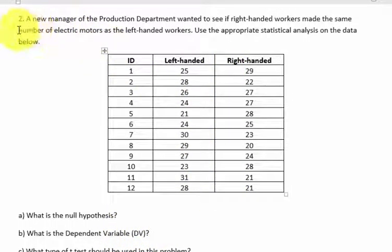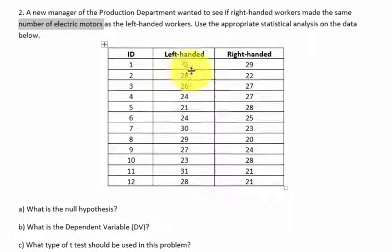The DV is the number of electric motors. That's what these numbers represent.